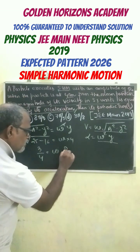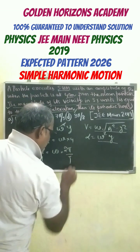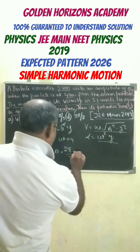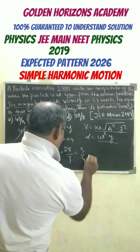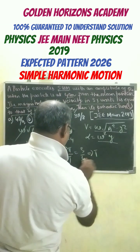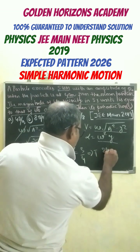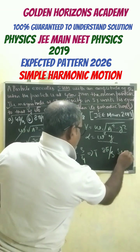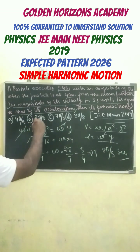But omega equals 2 pi by T. So finally we can get 2 pi by T equals 3 by 4, which gives T equals 8 pi by 3 seconds. So our final answer is this.